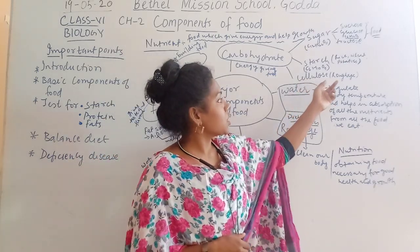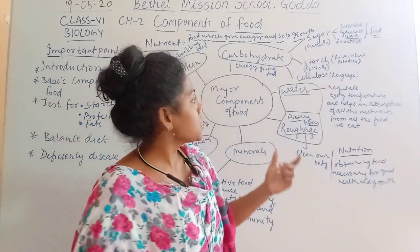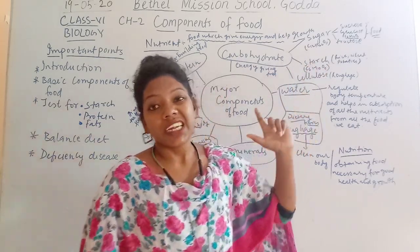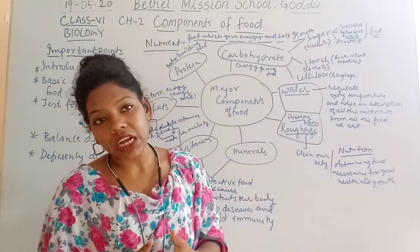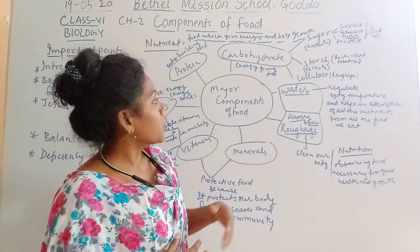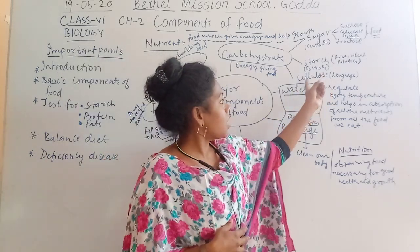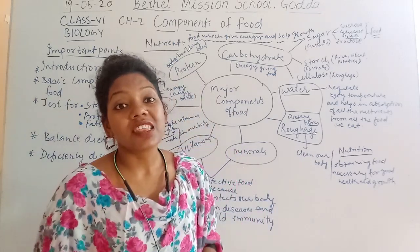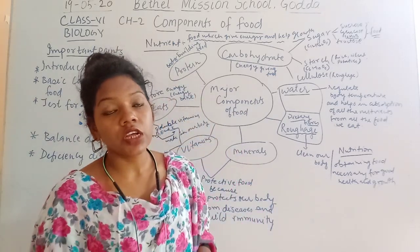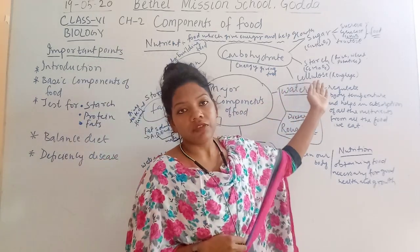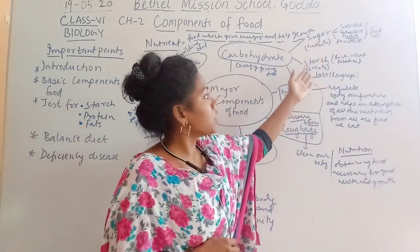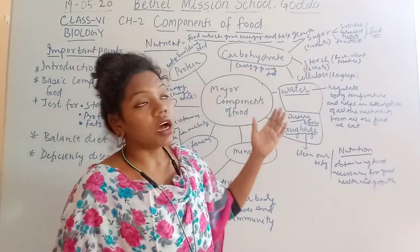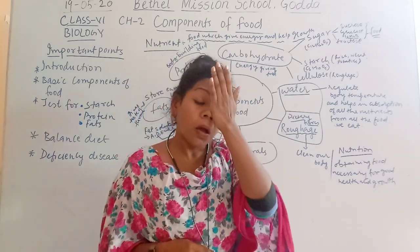Another component is cellulose, which works as roughage. Cellulose and starch are tasteless and have no color. Cellulose is found in the cell wall of plants and it works as roughage. So these are the three important types of carbohydrates which give energy to our body.